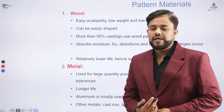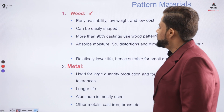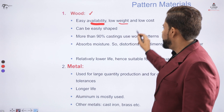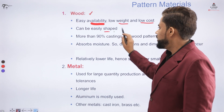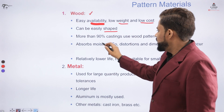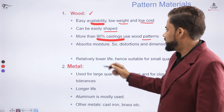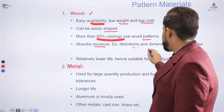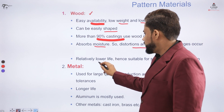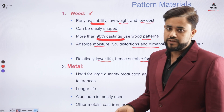There are certain materials used as pattern materials. We majorly use wood because it is easily available, has low weight, low cost, and can be shaped easily. More than 90% of castings use wooden patterns. However, the major drawback of wood is that it absorbs moisture, so distortion and dimensional changes generally occur. Wood generally has a lower life and is only suitable for small quantity productions.